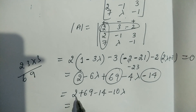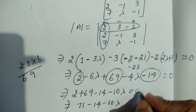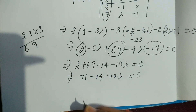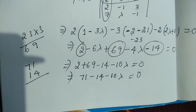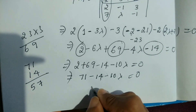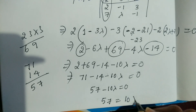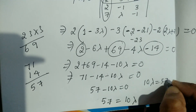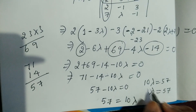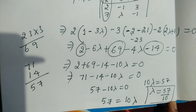So the determinant equals 57 − 10λ = 0. This implies 10λ = 57, therefore λ = 57/10. So the value of lambda for which the system has a non-trivial solution is 57 by 10.